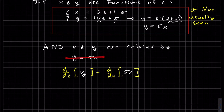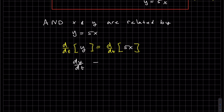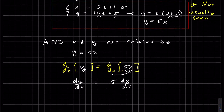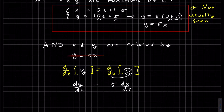So we're taking the derivative with respect to t of both sides. This is just dy/dt, and the derivative of 5x is 5, and then we have to chain rule it because x is in terms of t, so it's dx/dt. The 5 can come out, and d/dt of x is dx/dt. So what I'm trying to show is that if we have two variables that are related, then the rates of change are related.